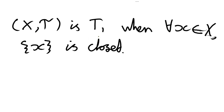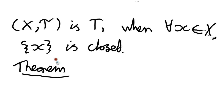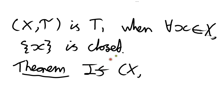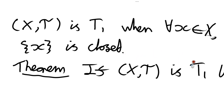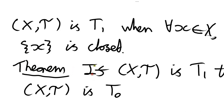This is actually a stronger condition than T0. So now we come to our first theorem, which says that if X-tau is T1, then X-tau is T0. It would be good if you could pause the video now and see if you can work out the proof to this. It's not terribly difficult.